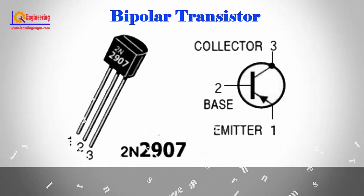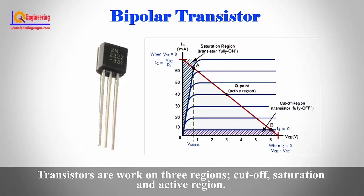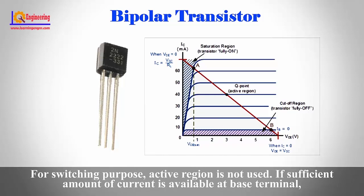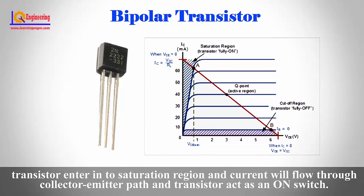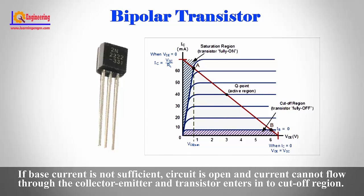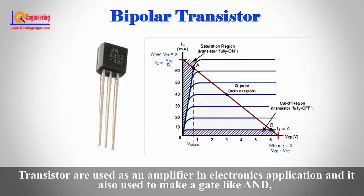Bipolar junction transistor (BJT) has three terminals: base, emitter, and collector. Transistors work in three regions: cutoff, saturation, and active. For switching purposes, the active region is not used. If sufficient current is available at the base terminal, the transistor enters saturation and current flows through the collector-emitter path, acting as an on switch. If base current is insufficient, the circuit is open and the transistor enters cutoff, acting as an off switch.